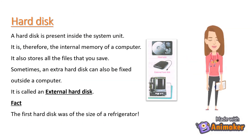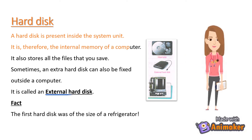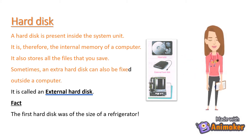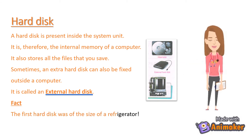Hard disk: A hard disk is present inside the system unit. It is, therefore, the internal memory of a computer. It also stores all the files that you save. Sometimes, an extra hard disk can also be fixed outside a computer — it is called an external hard disk. Fact: The first hard disk was of the size of a refrigerator.